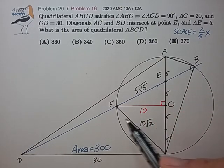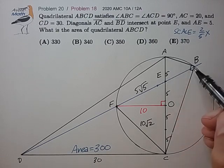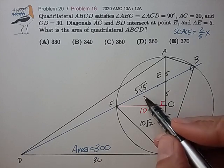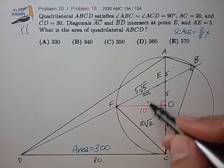And we also know that triangle FEC is similar to triangle AEB because they're formed by these two intersecting cords. And the length scale ratio is root 5. So the area scale factor is 5.